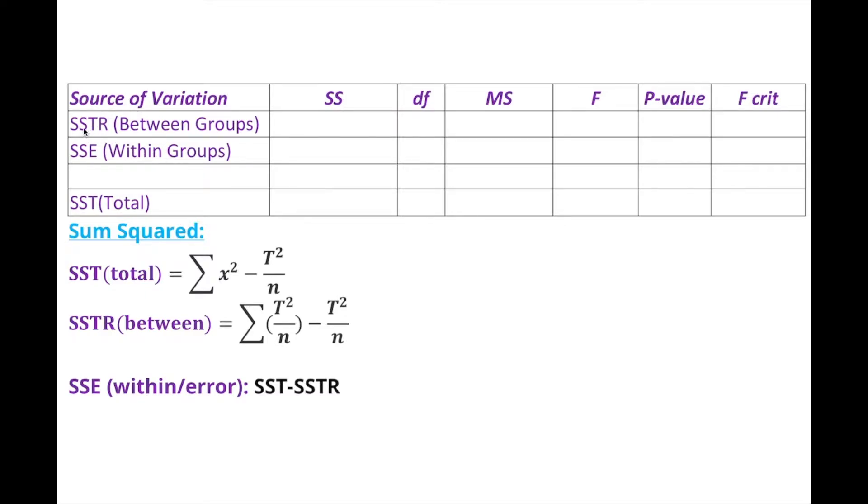Source of variance includes SSTR sum squared treatment, which means between the groups. SSE sum squared error is within the group, and SST is total sum squared. This SS is no stranger. If we flashback to chapter three or four, we found standard deviation and variance, and we've seen SS. This is the computation formula. Let's go back and review SS quickly.